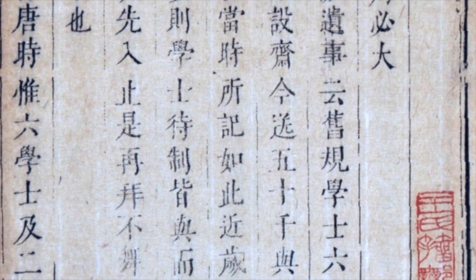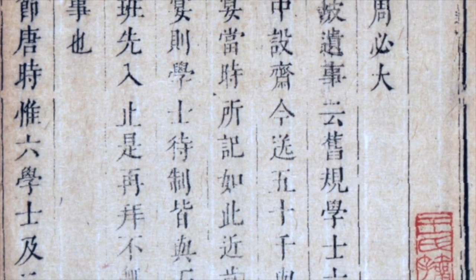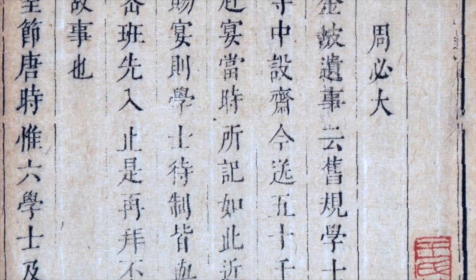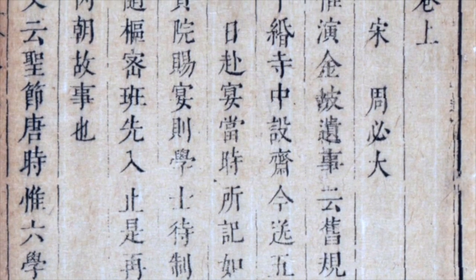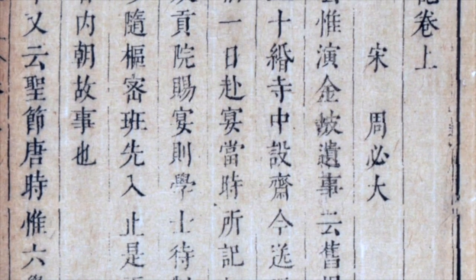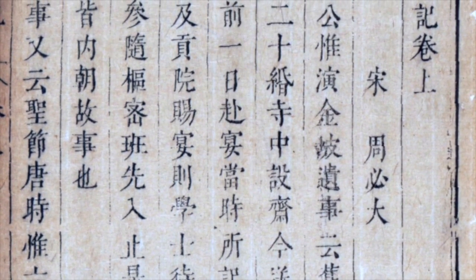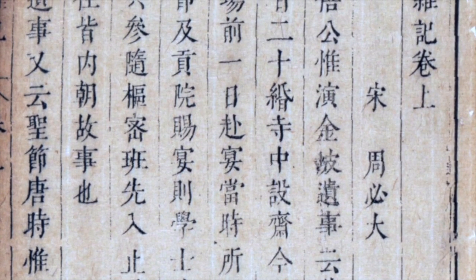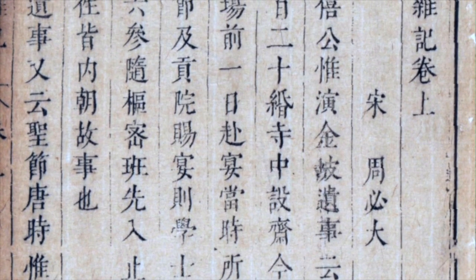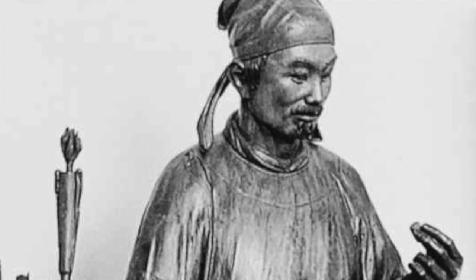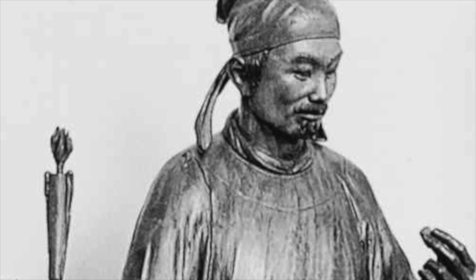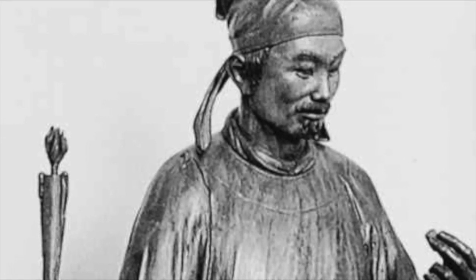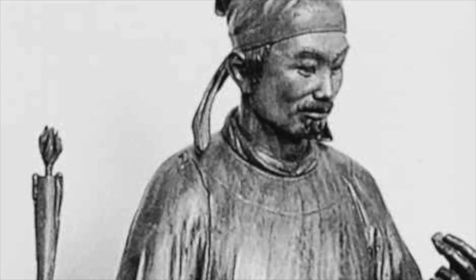Furthermore, in 1193, Zhou Bi-Da, an officer of the Southern Song Dynasty, made a set of clay movable type according to the method described by Shen Kuo and printed his own book, Notes from the Jade Hole. However, this technology was only applicable for individual publishing rather than mass production of Confucian or philosophical writings that were much more popular among Chinese scholars.